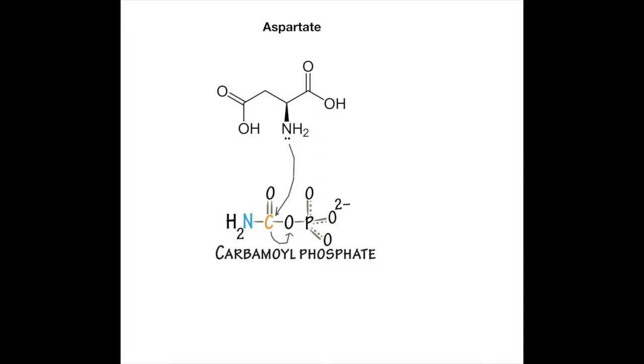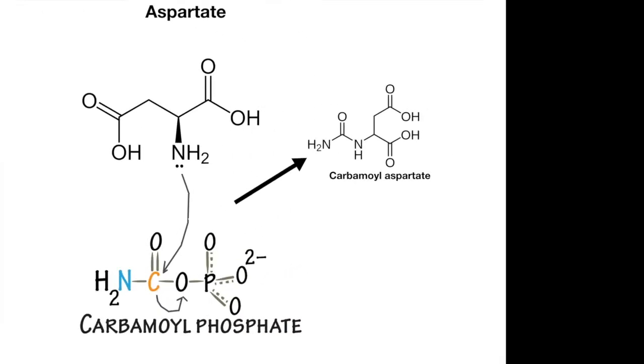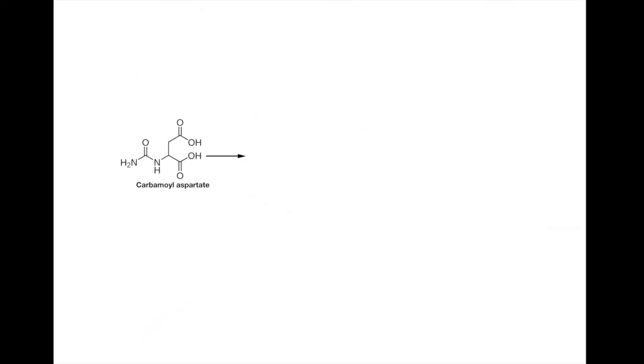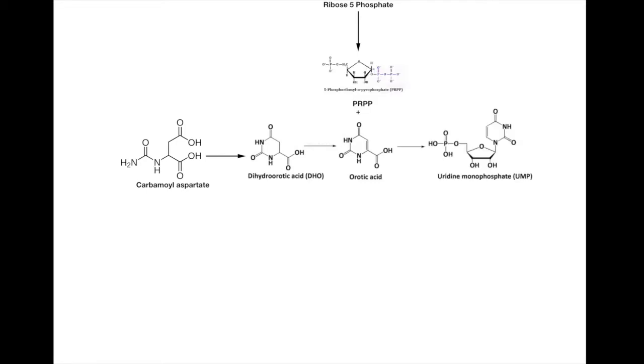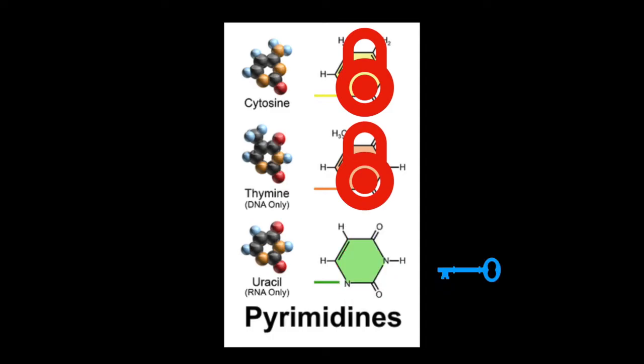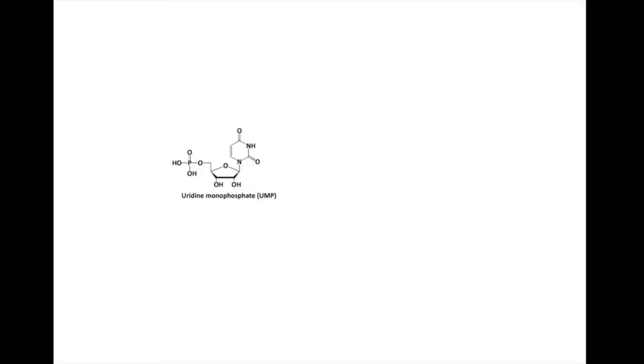Aspartate is then added to carbamoyl phosphate to produce orotic acid. Ribose 5-phosphate from the pentose phosphate pathway is converted into PRPP, which adds to orotic acid to produce UMP by the ever so cleverly named UMP synthase. And this is where we see our first pyrimidine made, uracil. UMP is uridine monophosphate for short.